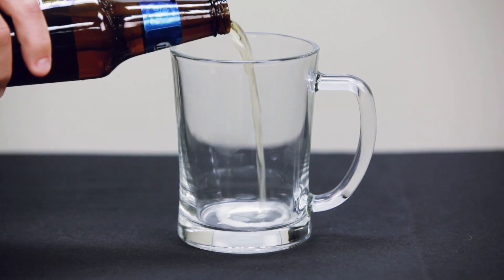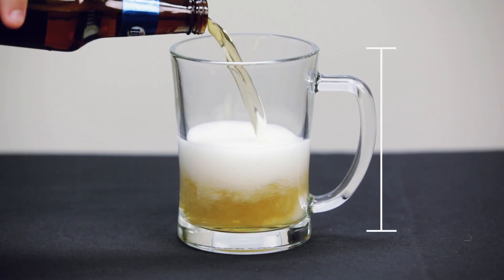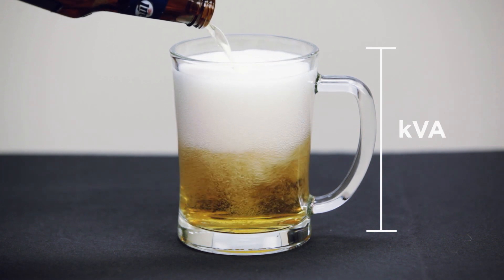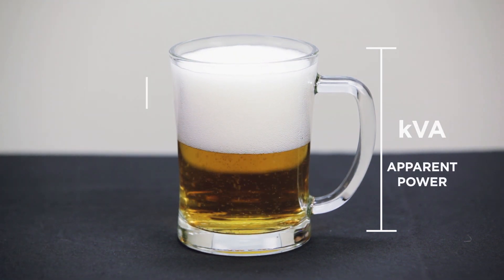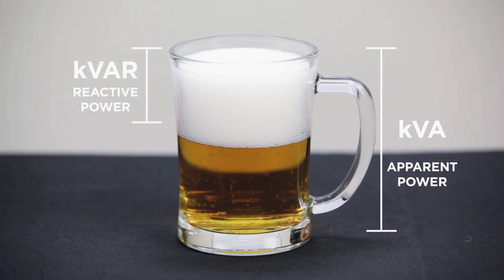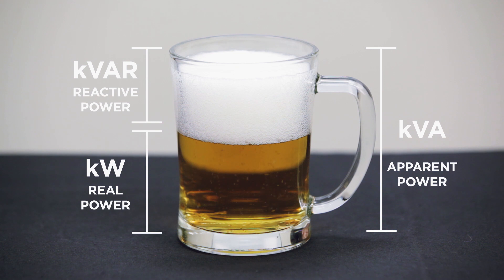In this demonstration, the entire mug — the foam and the beer — is depicted as KVA, or apparent power. The foam represents KVAR, or reactive wasted power. The beer, the actual consumable portion, represents KW, or the real usable power.